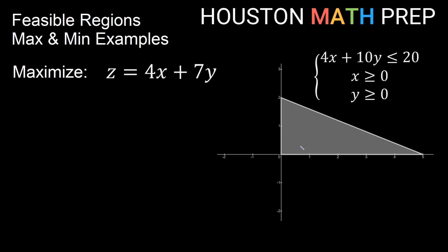In our first example, we want to maximize z equals 4x plus 7y on this region. The feasible region is a triangle, and since all the vertices are on an axis, they're easy to identify. The bottom corner is at the origin, 0 comma 0. The x-intercept is at 5, giving us the point 5 comma 0. And the y-intercept is at 2, giving us the point 0 comma 2.